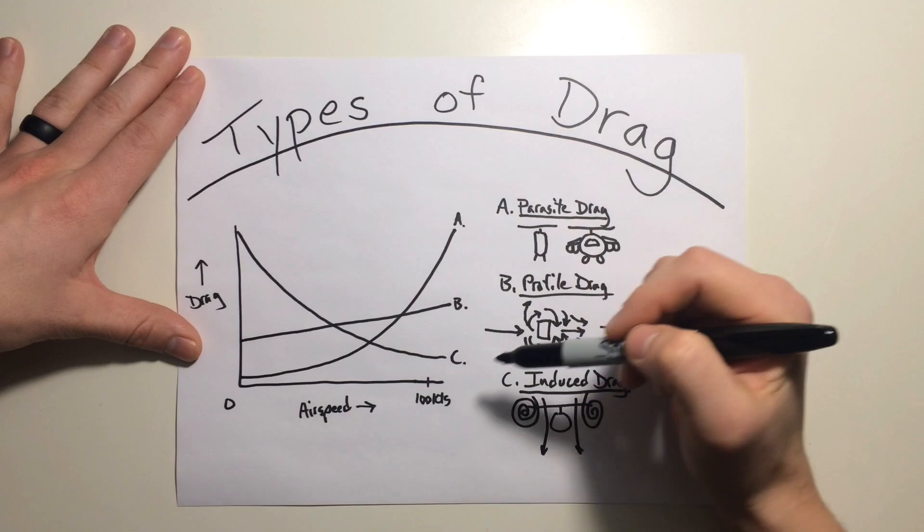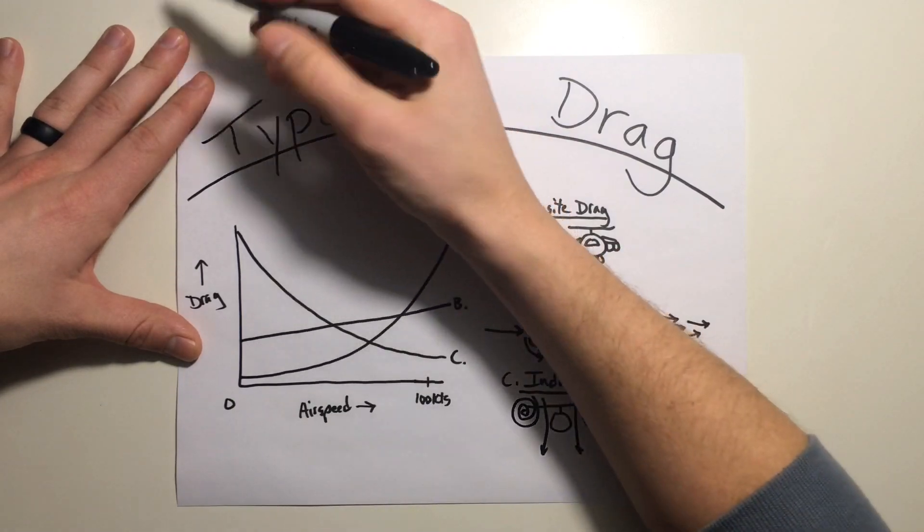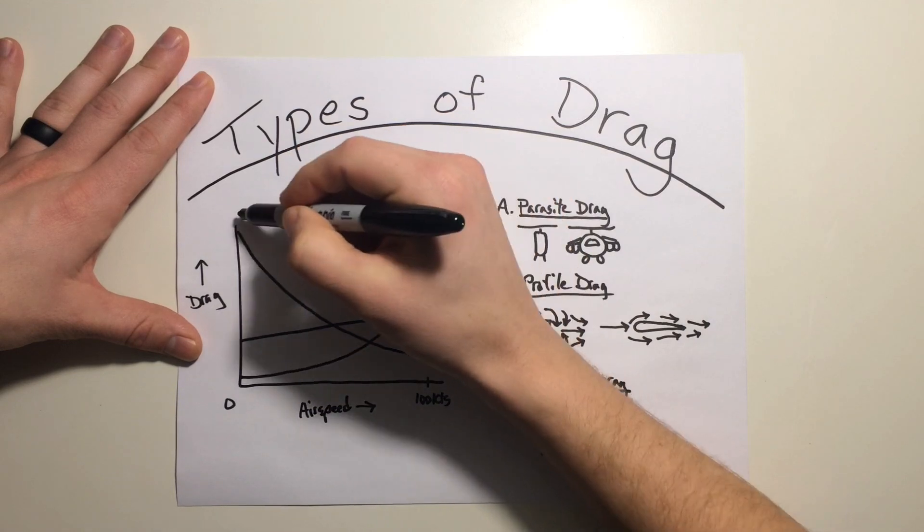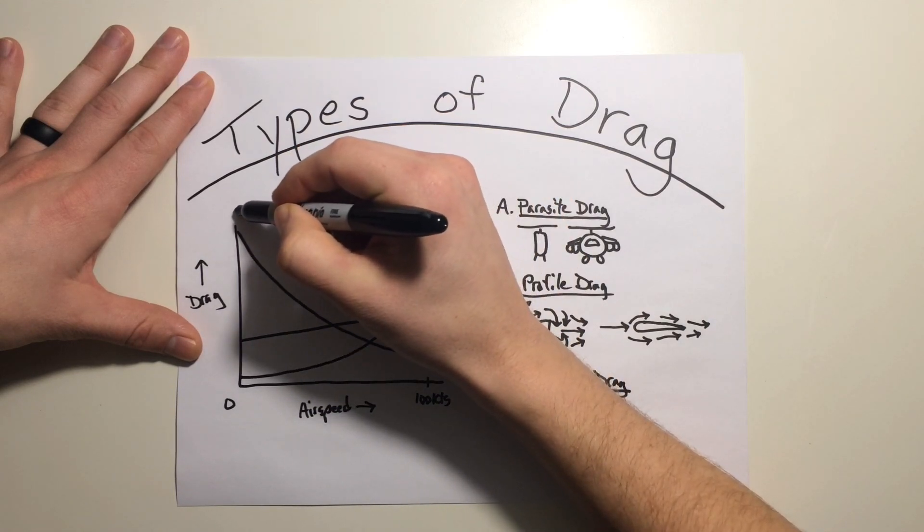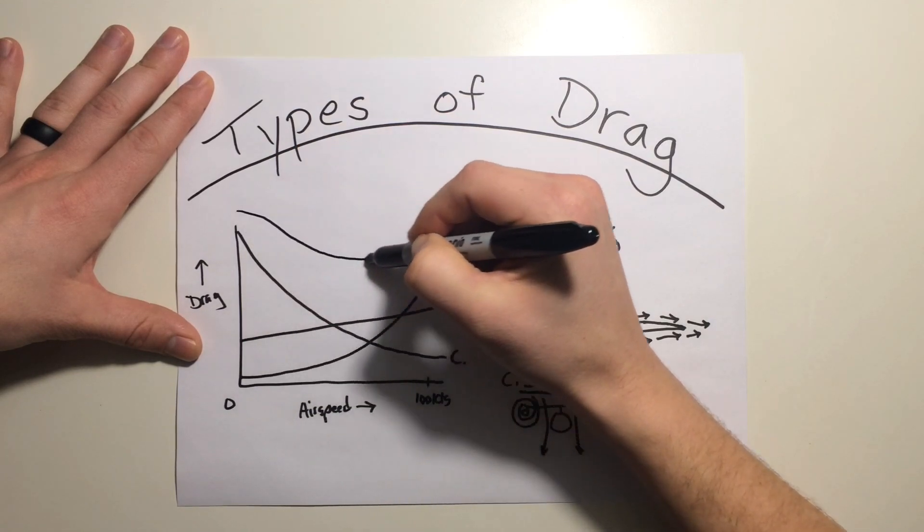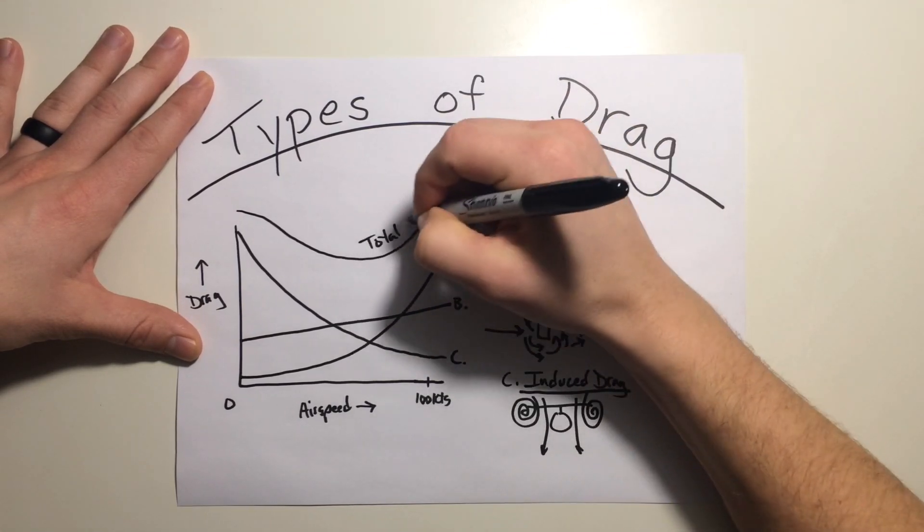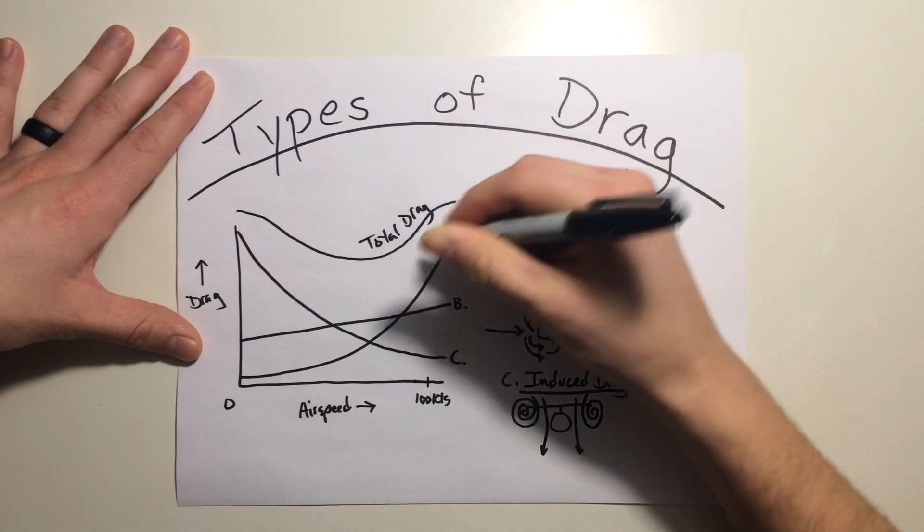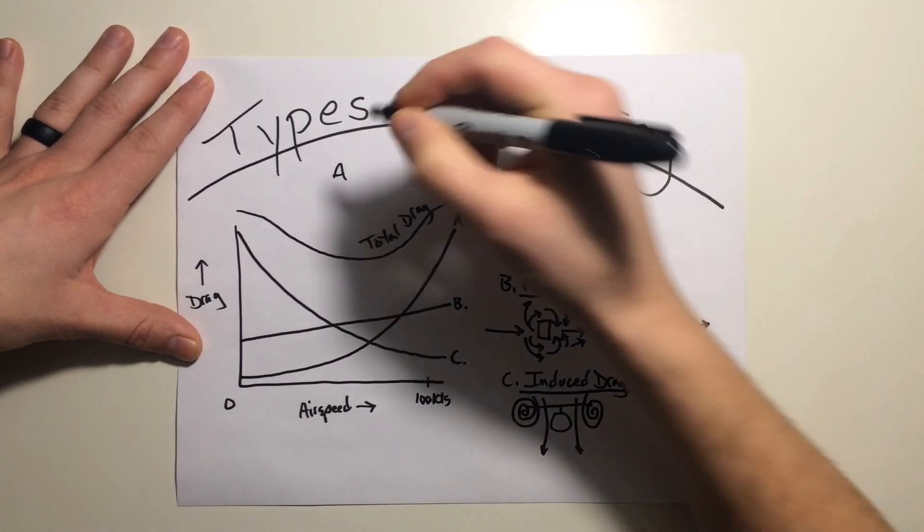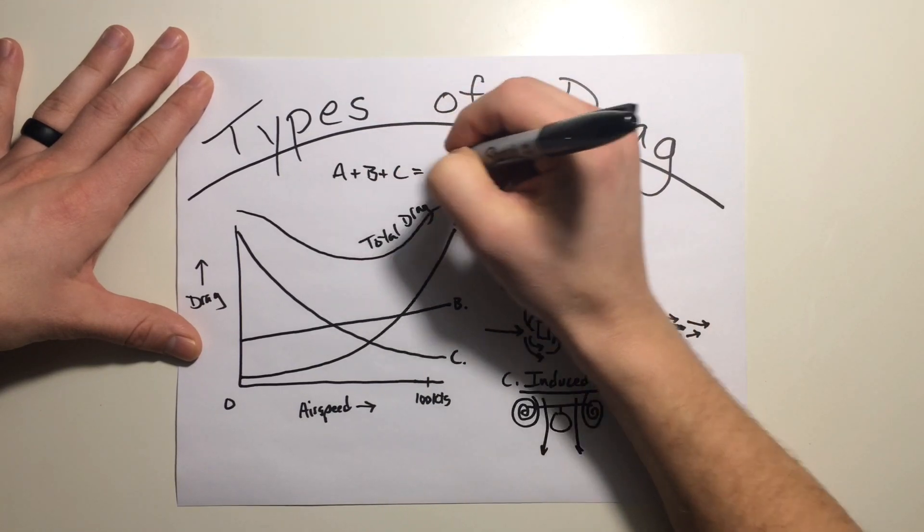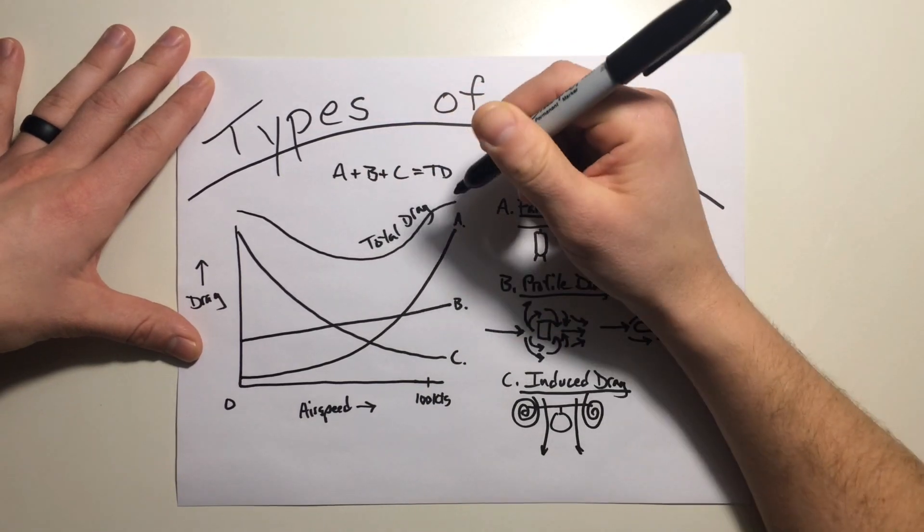Now if you were to combine all three of these types of drag, it'd be plotted somewhere about here if you were to add it all up. But for sake of simplicity we'll keep it right here with the chart. If you add them all up you're going to see a line that resembles something like this, and this is going to be your total drag line. This is a product of your parasite drag plus your profile drag plus your induced drag equals your total drag.